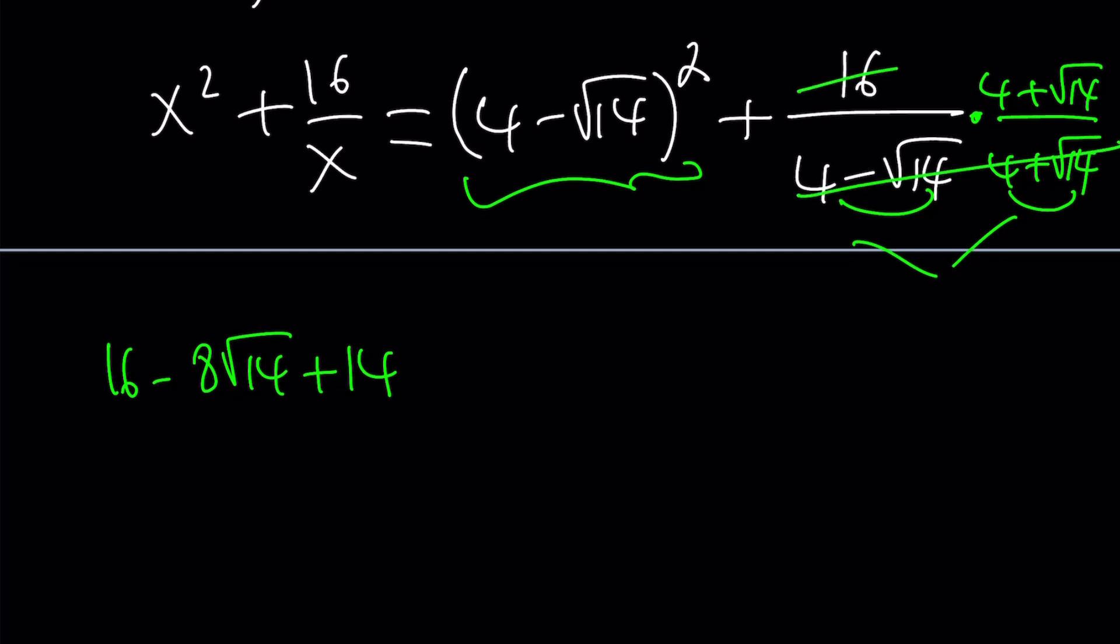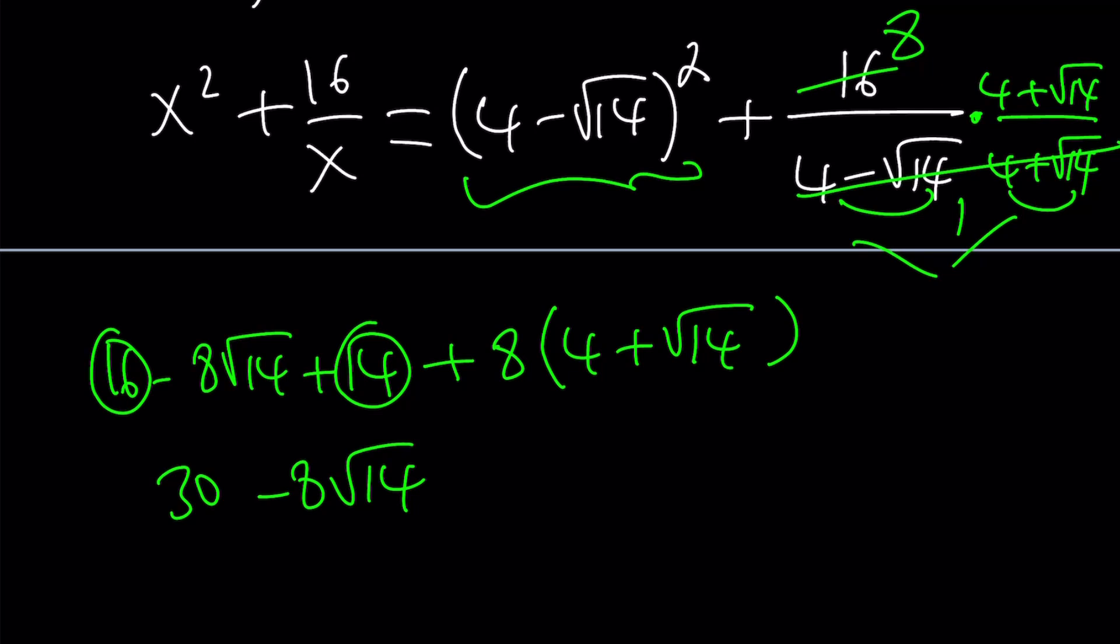2 goes into 16, 8 times. So now we have one left at the bottom. Make sense? Okay. So that's going to give us the following: plus 8 multiplied by the quantity 4 plus root 14. Let's go ahead and add these up. 16 plus 14 is 30 minus 8 root 14. And then I'm going to go ahead and distribute the 8 over this. 8 times 4 is 32 plus 8 times root 14 is 8 root 14. So far, so good.